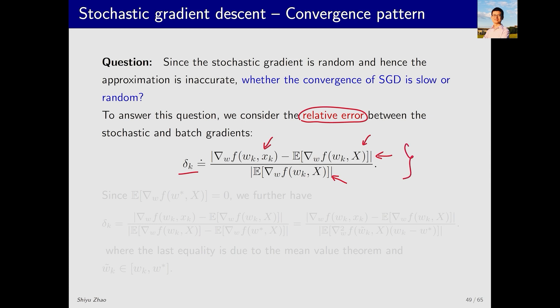This defines the relative error between the stochastic and true gradients. Here for simplicity, I assume all of them are scalars. Based on this relative error, we can derive an interesting conclusion.